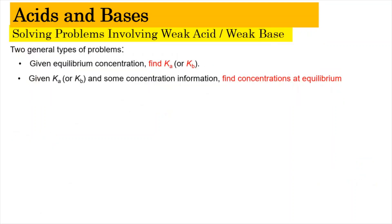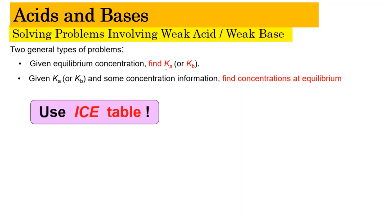Now we're going to learn how to solve problems involving weak acids as well as weak bases. There are two general types of problems: first, if we are given equilibrium concentration, we need to find Ka or Kb; or in other situations, we can be given Ka or Kb and some other concentration information and need to find the concentration at equilibrium. In order to solve the problem, we need to use the ICE table.